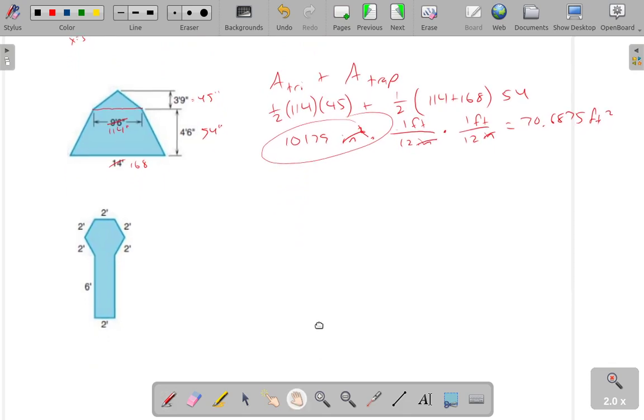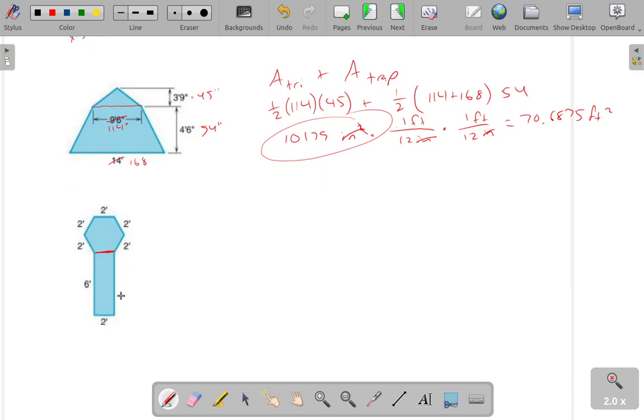All right, this last shape here, I'm inclined to see that there is a regular hexagon up top. You can see that all sides, all six sides have a two foot distance and a little rectangle on the bottom. So the area of the hex plus the area of the rect.